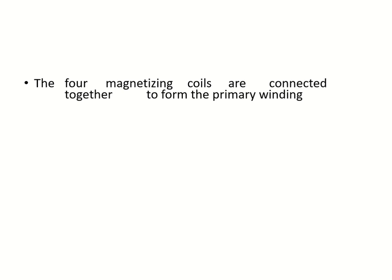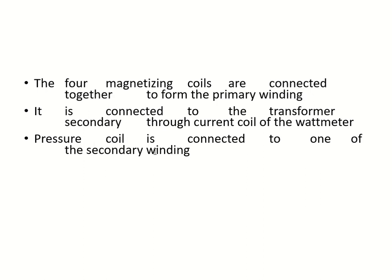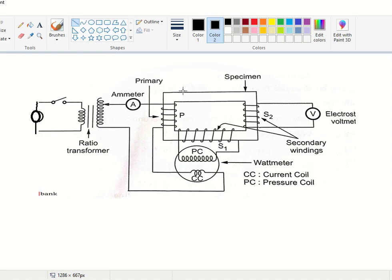Four magnetizing coils are connected together to form the primary, which is connected to the transformer secondary through the current coil of the wattmeter. You are giving input supply and, using an auto-transformer, providing supply to the primary. In order to measure the current, you connect it to the current coil of the wattmeter.